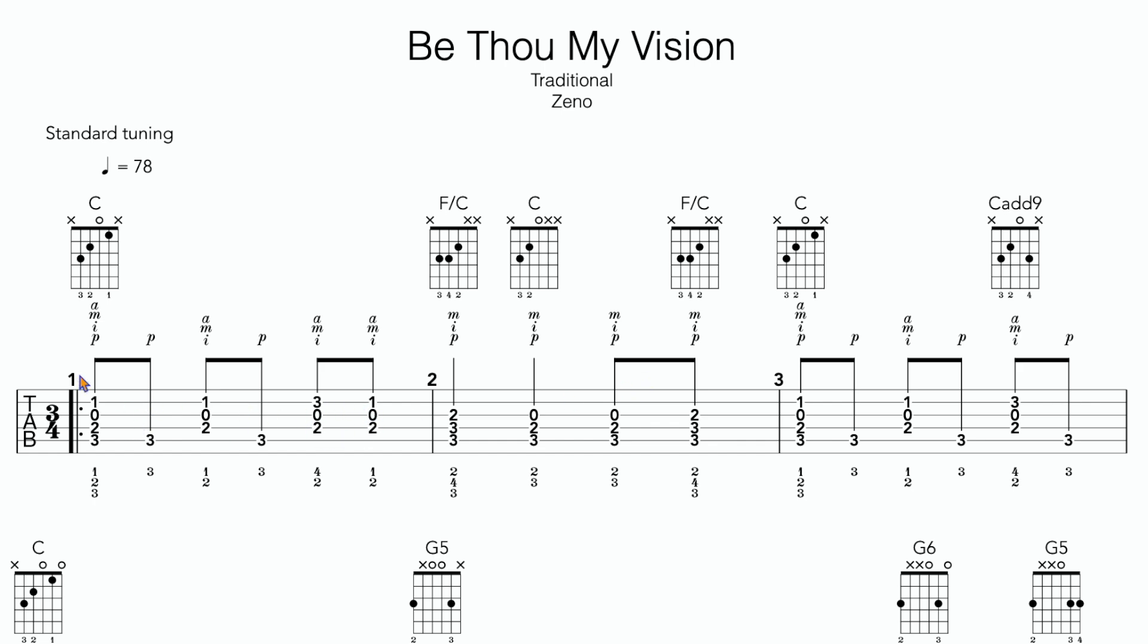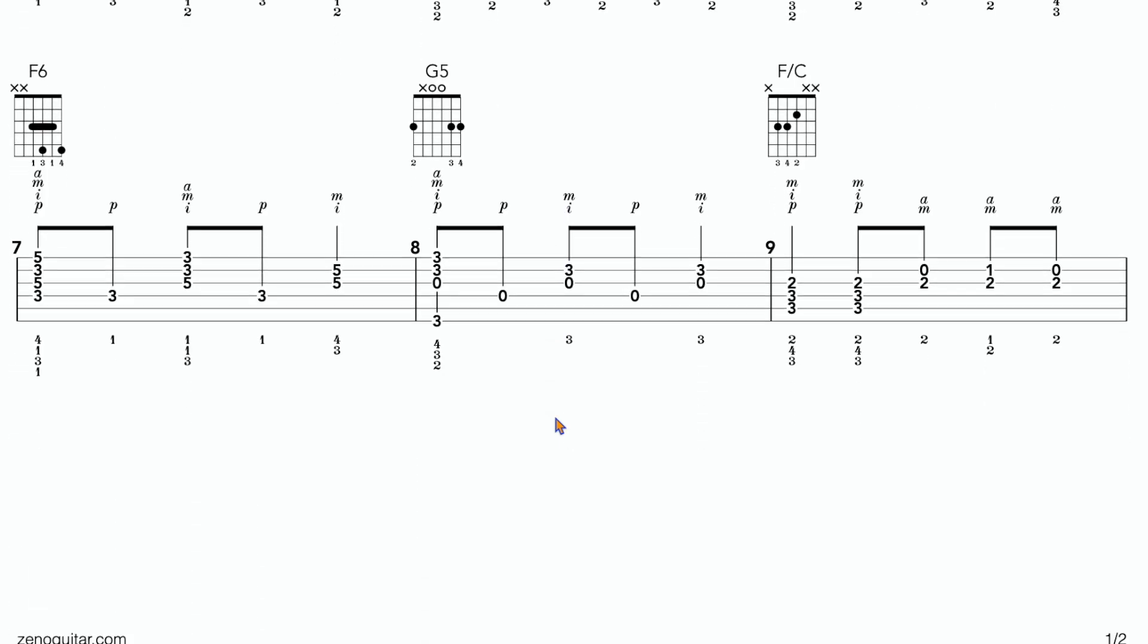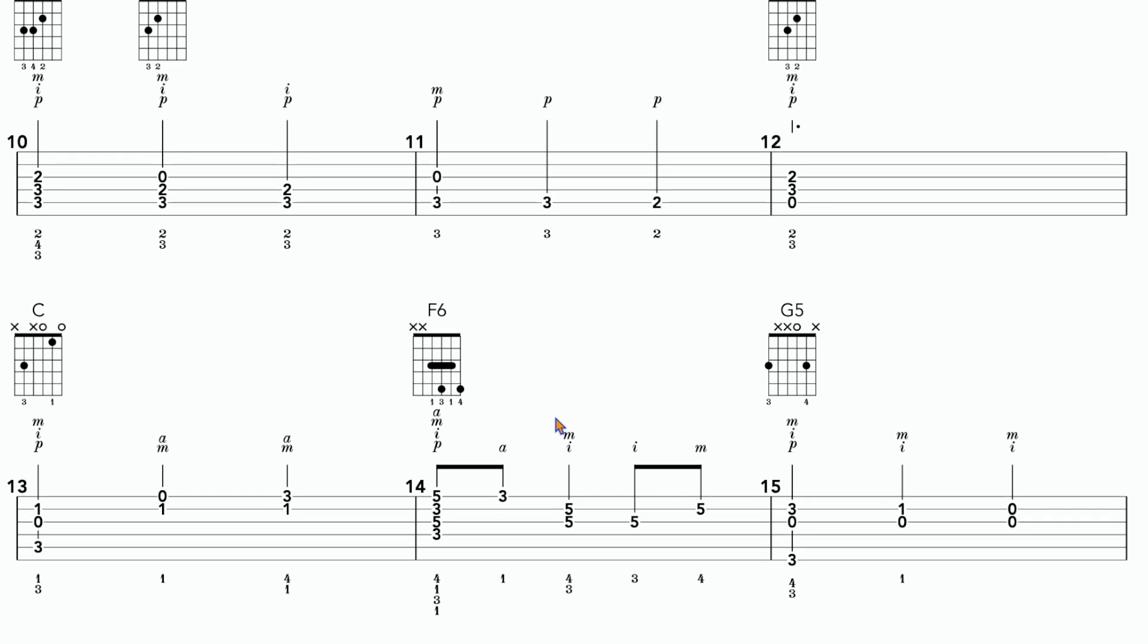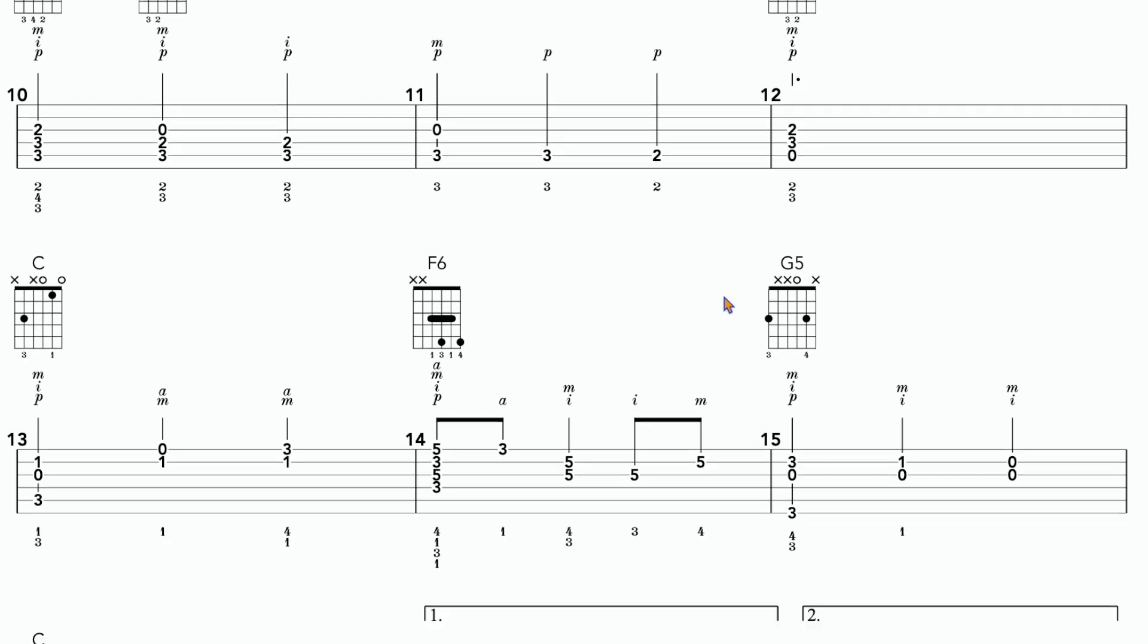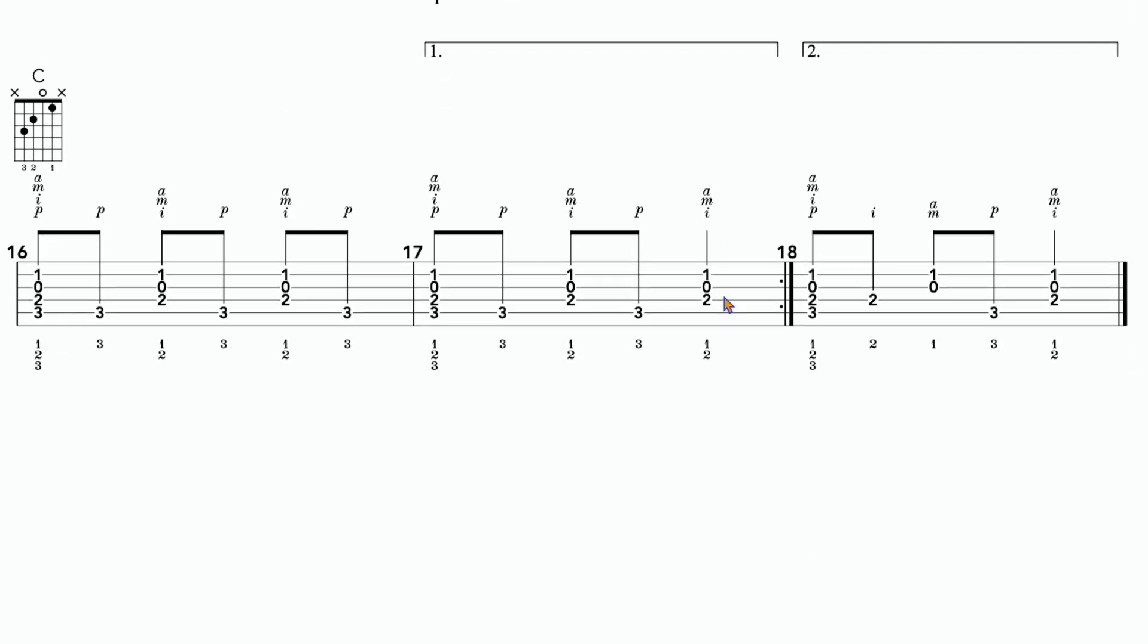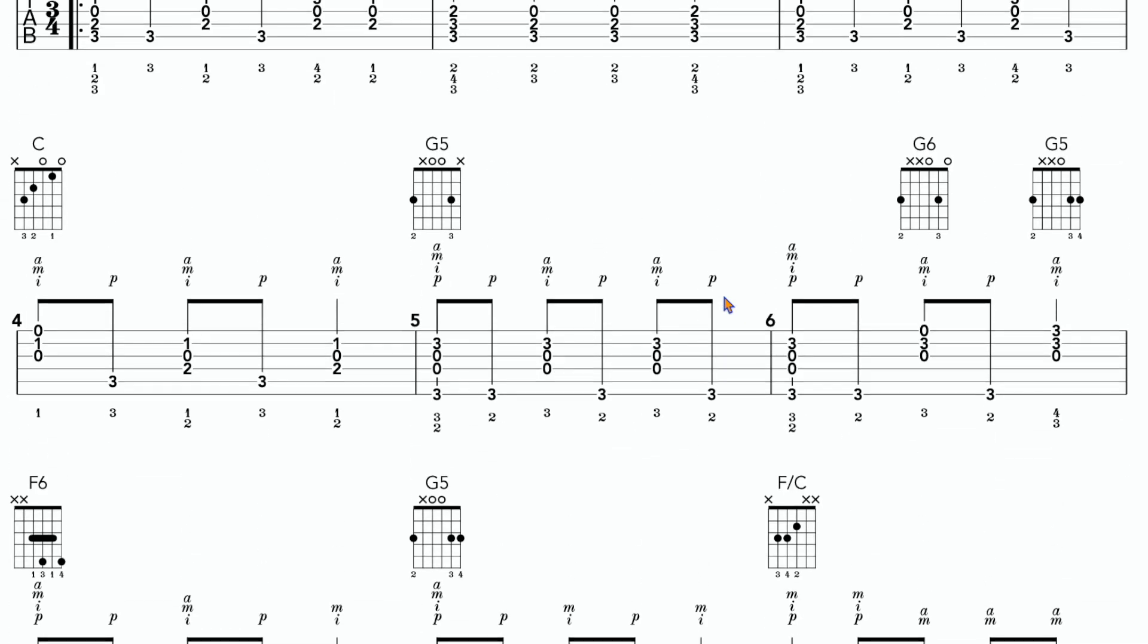So if you count this, it will be 1 and 2 and 3 and 1, 2, 3 and 1 and 2 and 3 and. Rhythmically it's very simple because really we're only using 8th notes and quarter notes here. And of course you have your dotted half note, which is really just 1, 2, 3. But besides that, everything else is a simple quarter note and 8th notes.